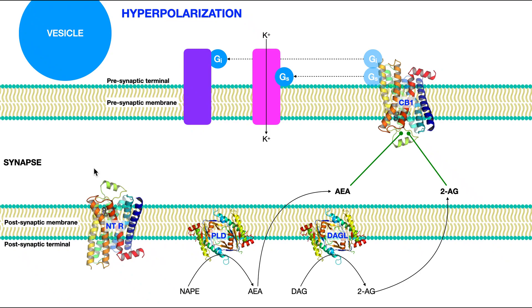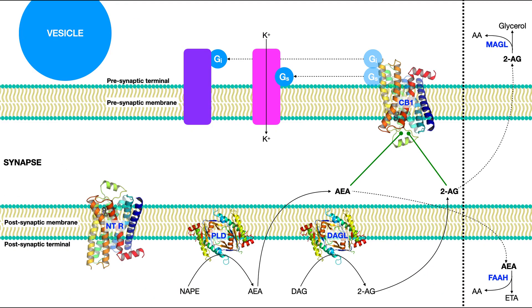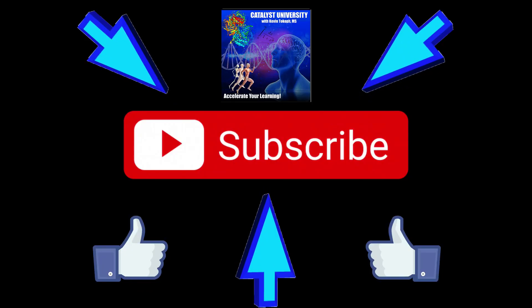We're going to conclude the video here. This is the major retrograde mechanism of endocannabinoids. In the next video, we're going to pick up with their degradation. And then, after that, we'll look at actually how they regulate tumor growth. Please make sure to like this video and subscribe to my channel for future videos and notifications. Thank you.